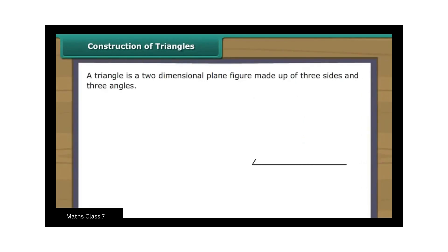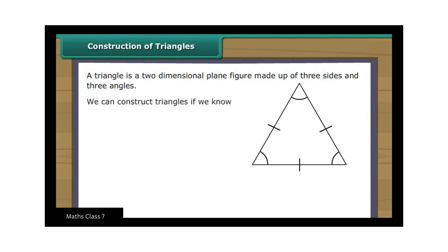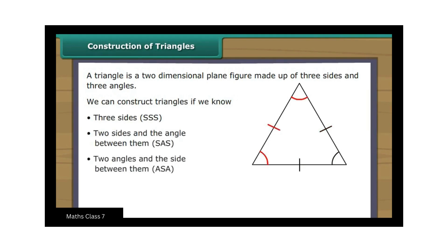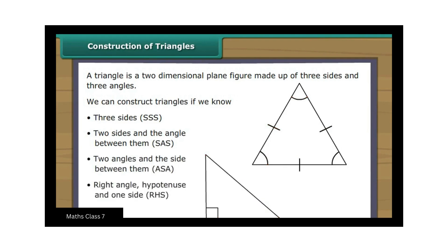Construction of Triangles. A triangle is a two-dimensional plane figure made up of three sides and three angles. We can construct triangles if we know three sides (SSS), two sides and the angle between them (SAS), two angles and the side between them (ASA), or the right angle, hypotenuse and one side (RHS). Let us learn to construct all four types of triangles.